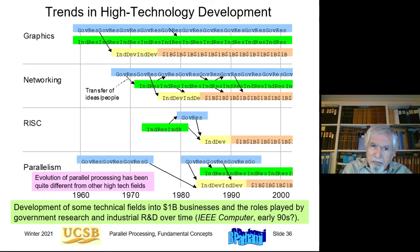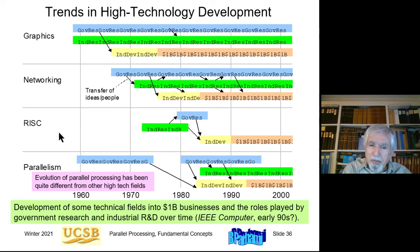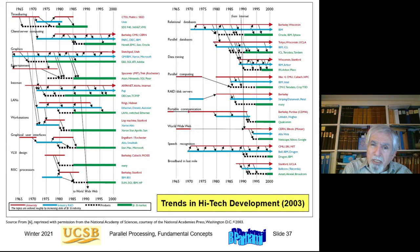This slide shows a general trend in how technologies develop — from graphics and networking to RISC and parallelism — typically starting with government support and then being adopted by industry, which takes the technology to more advanced levels.